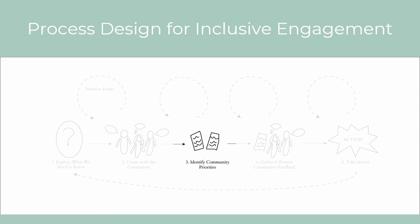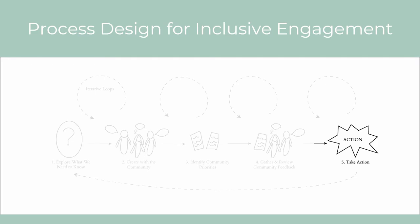Step 3 analyzes the themes that emerged in Step 2. This is where we expand on what was heard and put data into formats that will be used for wider community engagement. Step 4 refines information gathered from initial stakeholder engagement and delivers information to a wider audience for broader feedback. Step 5: action can take many forms — it can change how city processes are done or respond directly to a need the community has identified.